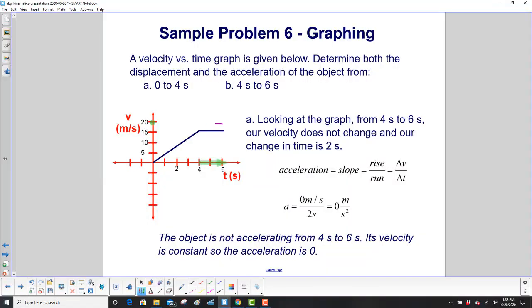Now we need the acceleration from 4 to 6. First of all, what happens to the velocity? It stays the same. So a constant velocity means you have zero acceleration. So let's just make sure it still works on our graph.